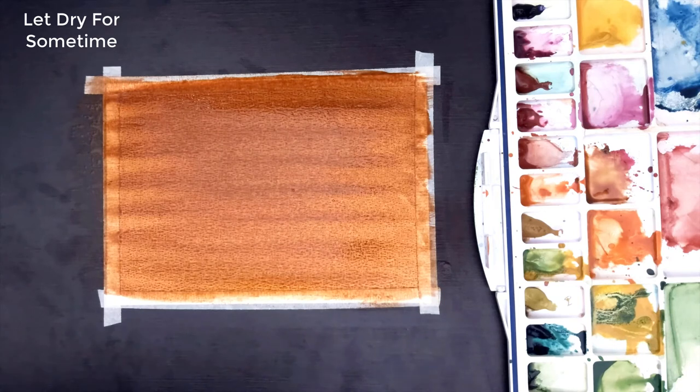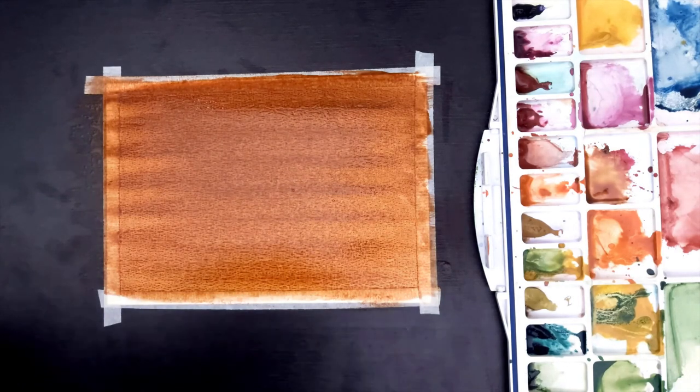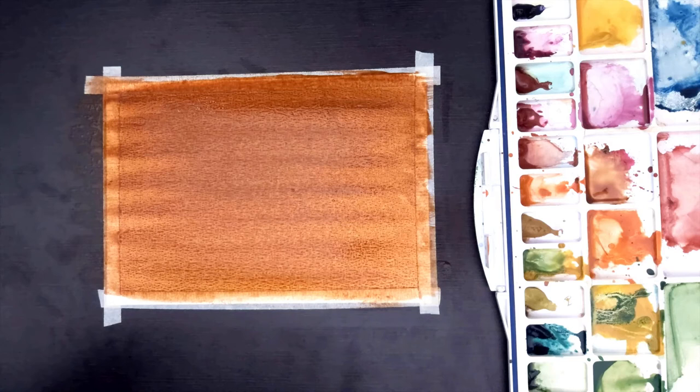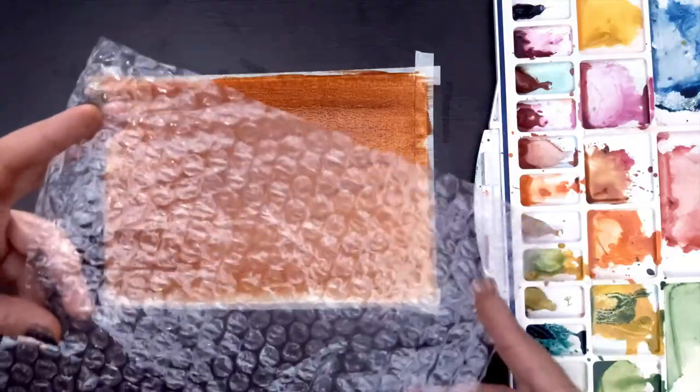Once you are done with a single coat, just wait for some time. It should not be completely dry but should be in the sheen texture. Sheen texture is the workable texture which is not very dry, not very wet. So wait till it has come to that level. After that, take a sheet of bubble wrap.